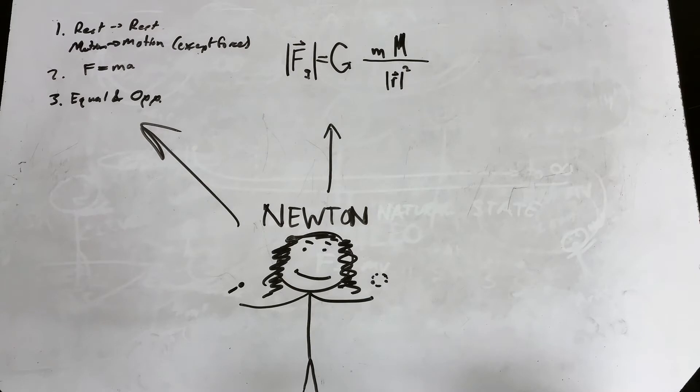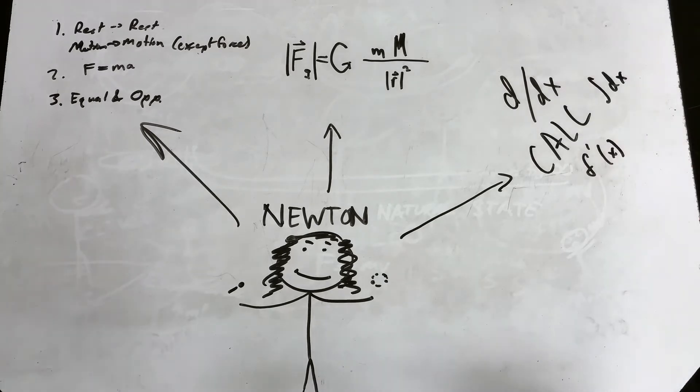Except Einstein later found out that it wasn't completely right. In order to do the calculations for these notions, Newton also had to invent basic calculus. Got him, Leibniz. Think about that. He invented calculus. So, yeah, pretty great.